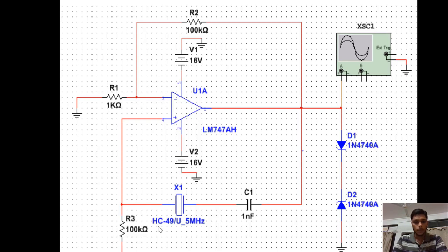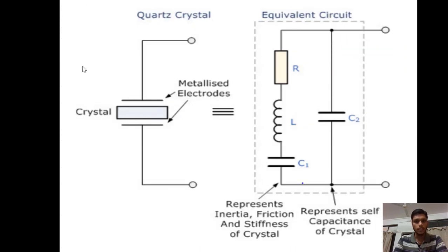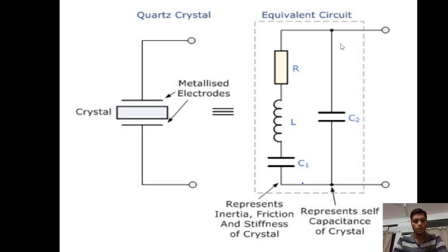Now let me introduce this component — it is an IC known as the quartz crystal, which comprises a crystal and metalized electrodes. The equivalent circuit of this IC consists of a resistance, an inductor, and a capacitance in series, with an additional capacitance in parallel with those three components.